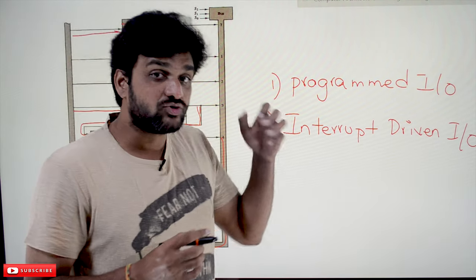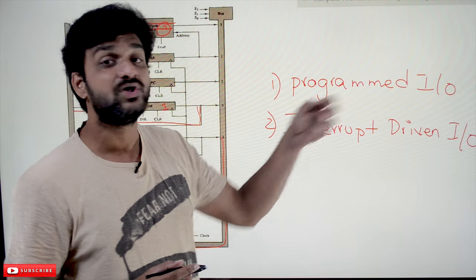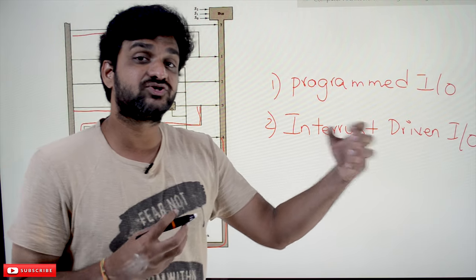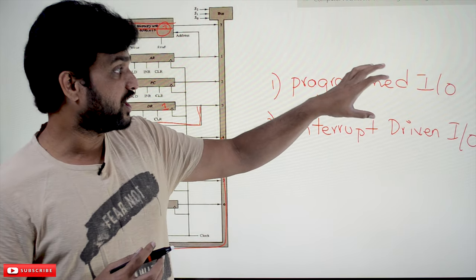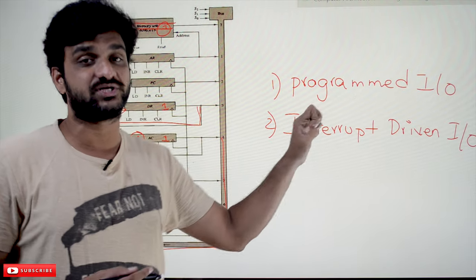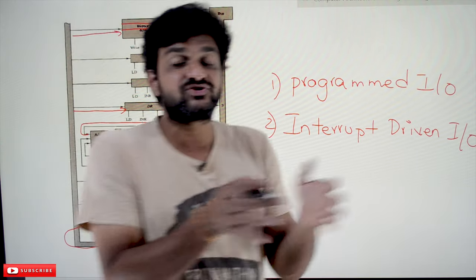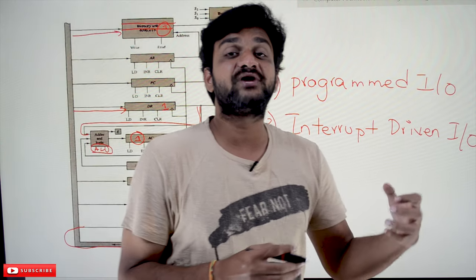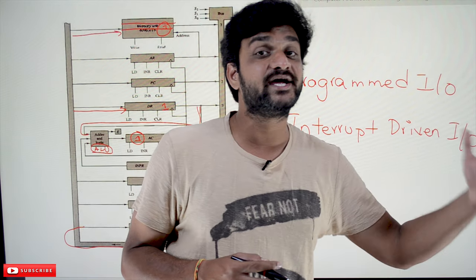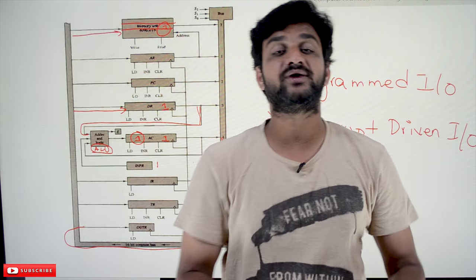There are two ways IO operations are performed: programmed IO and interrupt-driven IO. In our next video we will cover how programmed IO handles the execution of input/output operations. After that we will look at the demerits of programmed IO, and from there understand how interrupt-driven IO gets implemented.